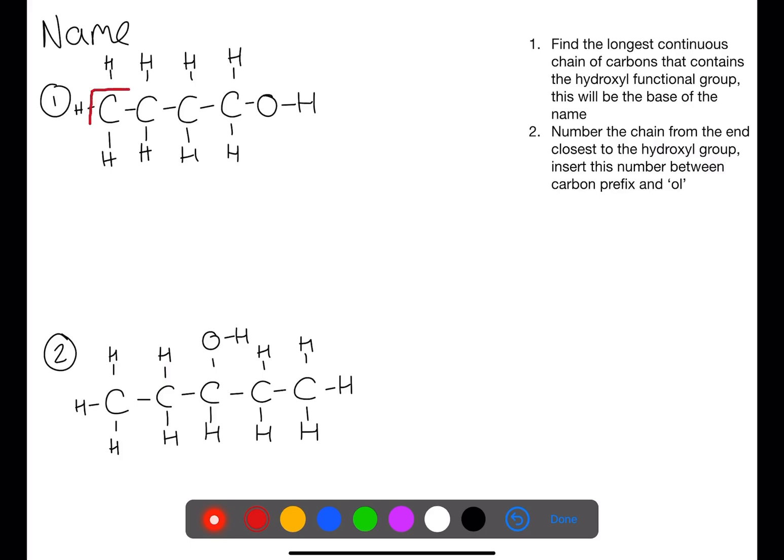For naming we need to find the longest chain of carbons with the hydroxyl functional group. We can see that that is four, so this is based on butane. We number from the end closest to the functional group, so that is from right to left in this example, and the hydroxyl functional group is on number one and we finish the name with 'ol'.